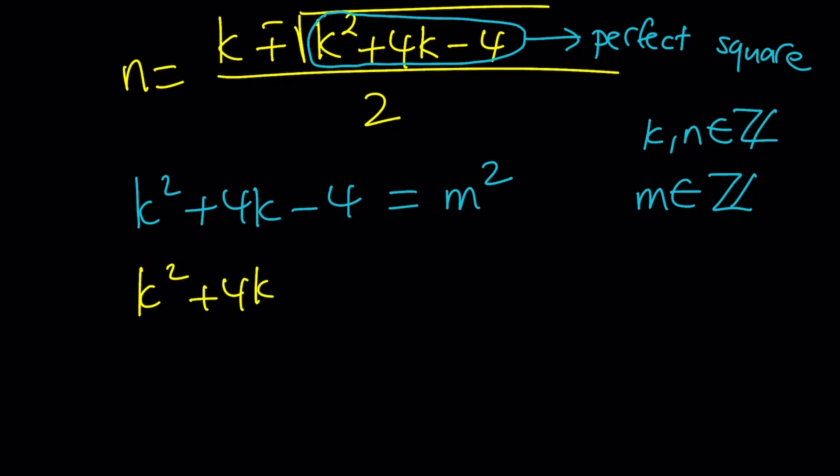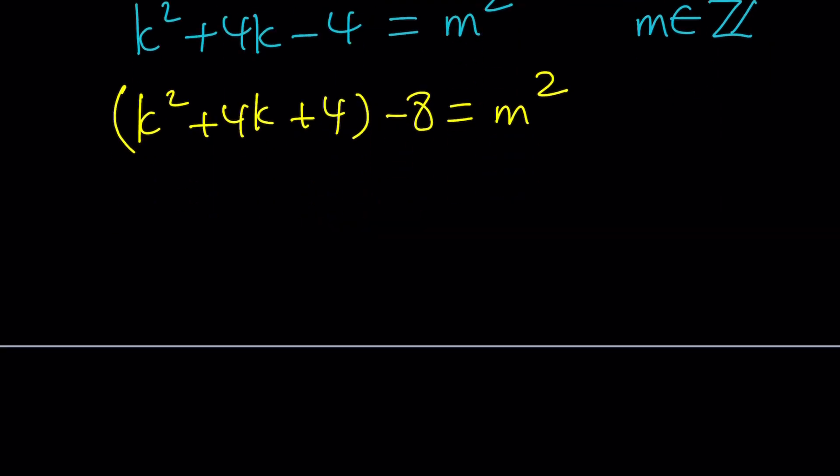So consider the following: k squared plus 4k plus 4 is a perfect square, and then I can just subtract 8 from it to balance my equation, because I have a negative 4. Now this becomes k plus 2 to the second power minus 8 equals m squared. And now we can put our expressions together and set it equal to 8. Now we have a difference of two squares, and we can factor it: k plus 2 plus m times k plus 2 minus m equals 8.